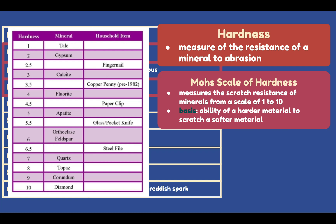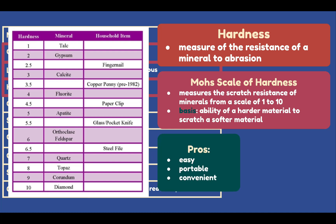The scale goes from 1 to 10, and on the third column you can also see the household item equivalent to each hardness value. For example, 2.5 corresponds to a fingernail. The pros of using the Mohs Scale: first, the test is easy; second, the test can be done anywhere, anytime, as long as there is sufficient light to see scratches; and third, it is convenient for field geologists with scratch kits who want to make a rough identification of minerals outside the lab.